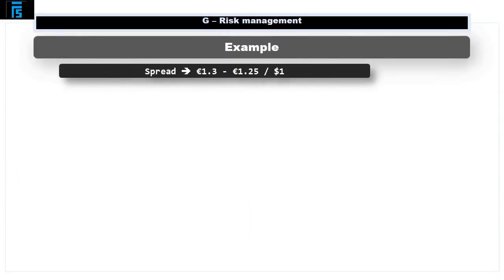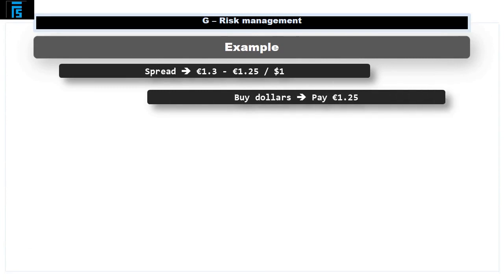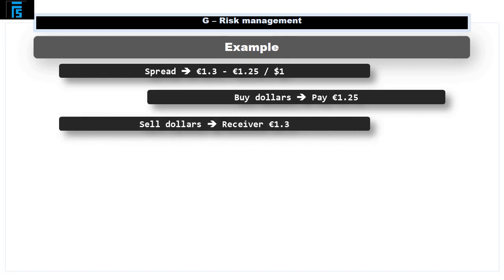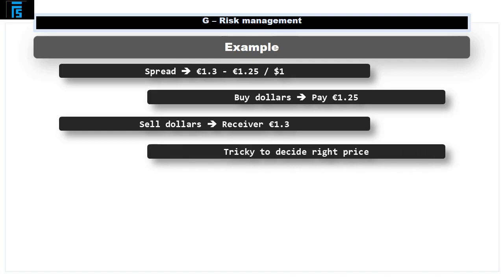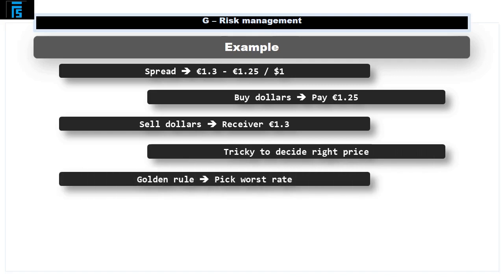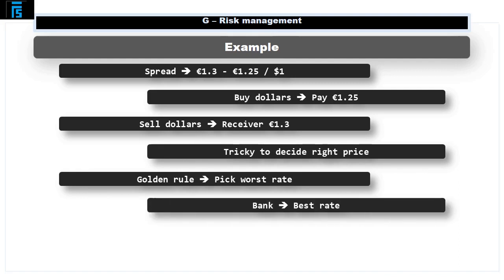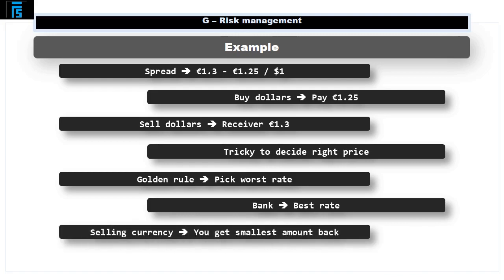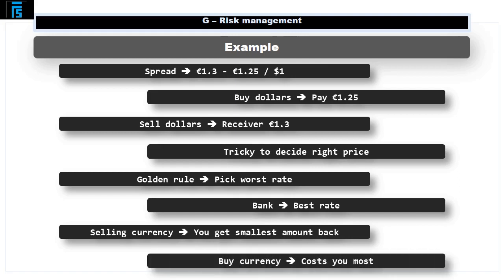For example, they may offer a spread of €1.3 to €1.25 per dollar. This means if they are buying dollars they will only pay €1.25, but they will sell dollars to you for €1.3. Remember the golden rule: always pick the worst rate for you, because it's the best rate for the bank and the bank always wins. The worst rate means if you're selling currency you'll get the smallest amount back, and if you're buying currency it costs you the most.